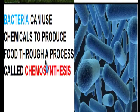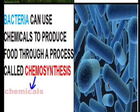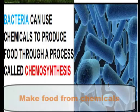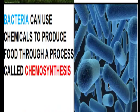Some bacteria live in very dark places, so they're not going to get the light they need. They depend on chemicals in the environment. Bacteria use those chemicals and a process called chemosynthesis to produce food. Breaking it down: chemo means chemical and synthesis means to make, so bacteria make their food from chemicals. So these are the two types of producers here on Earth.